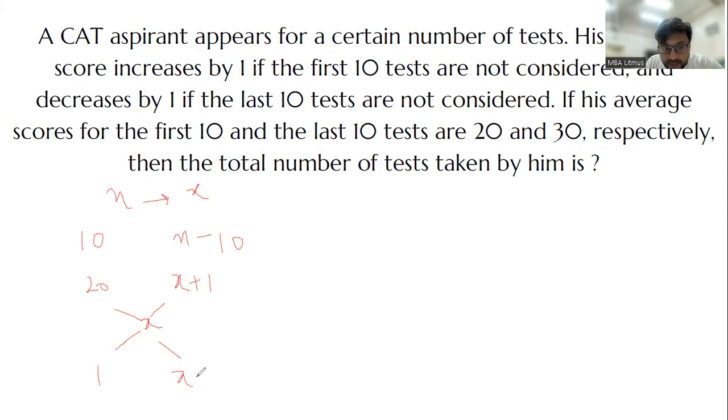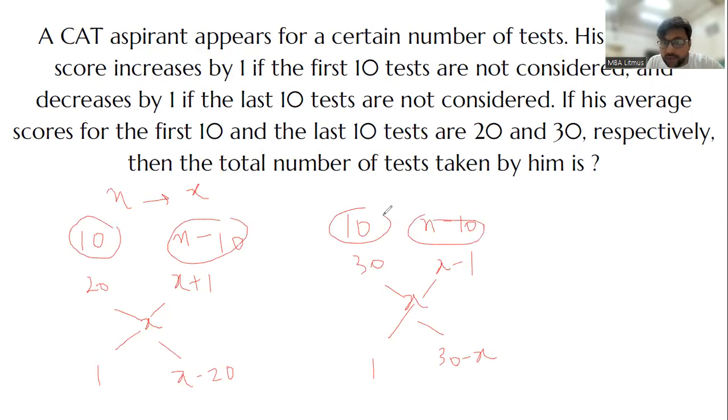Now similarly, let's say the last 10. Here I have 10, 10, and n minus 10. So therefore you have 1 is to x minus 20 as 1 is to 30 minus x, which means that x minus 20 must be equal to 30 minus x. What will happen? x is equal to 25. So 25, because you have another x value, 25 to 1 is to 5.